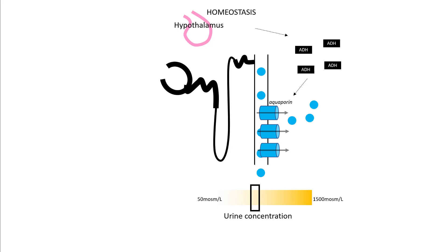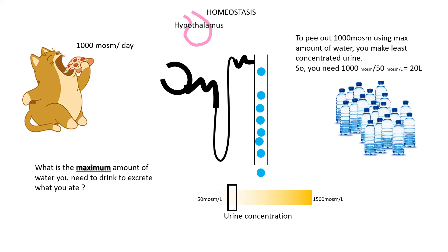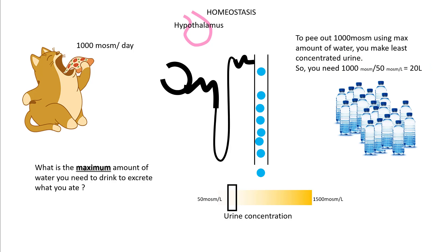From the previous lecture we understood that sodium homeostasis requires ADH, which results in aquaporin molecules in the collecting ducts — that governs your urine concentration. If you have to drink the maximum amount of water to excrete what you eat, for example a normal American diet has 1000 milliosmoles, you would need 1000 milliosmoles divided by the most dilute urine you can make — 50 milliosmoles per litre — so you can drink up to 20 litres without causing hyponatremia. But if you drink more than this, you would not be able to excrete that extra volume, and that is going to cause hyponatremia.